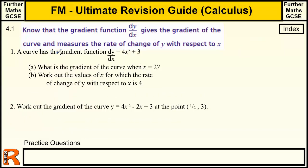A curve has a gradient function dy by dx equals 4x squared plus 3. So that's a gradient function that's already been differentiated. We're then asked: what is the gradient of the curve when x equals 2? The gradient of the curve is this function, so when x equals 2, we substitute that in.